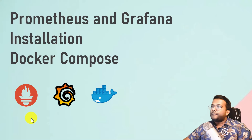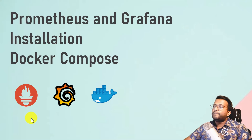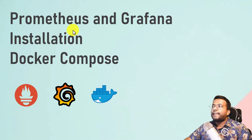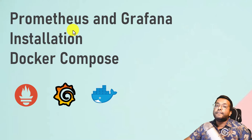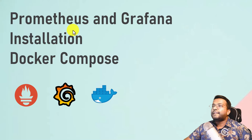Hello people, welcome back to my channel. Let's learn how we can install Prometheus and Grafana using Docker Compose. Prometheus is a metric server where multiple servers can push their metrics, and Grafana is basically used to view those metrics, plot graphs, plot visualizations, and do alerting.